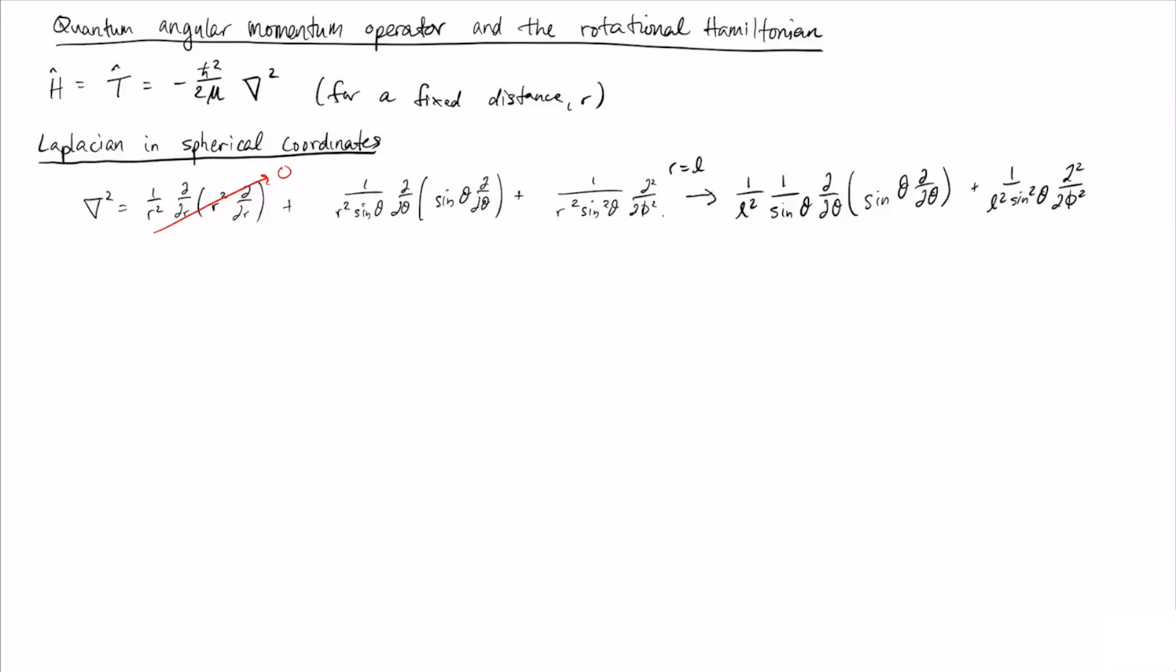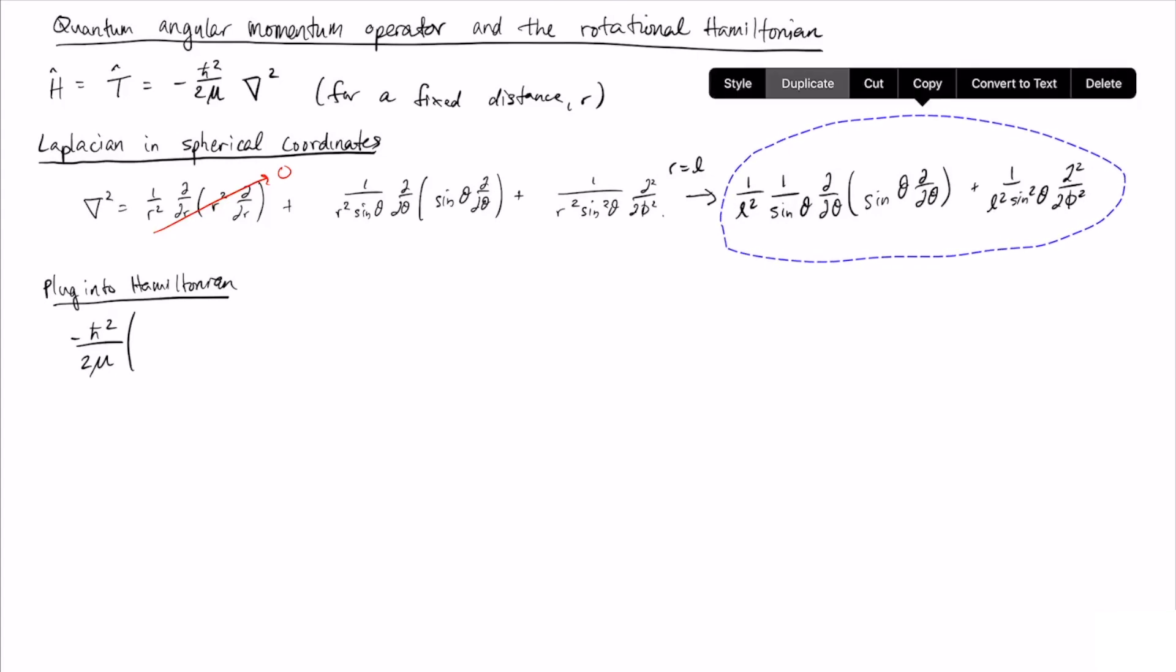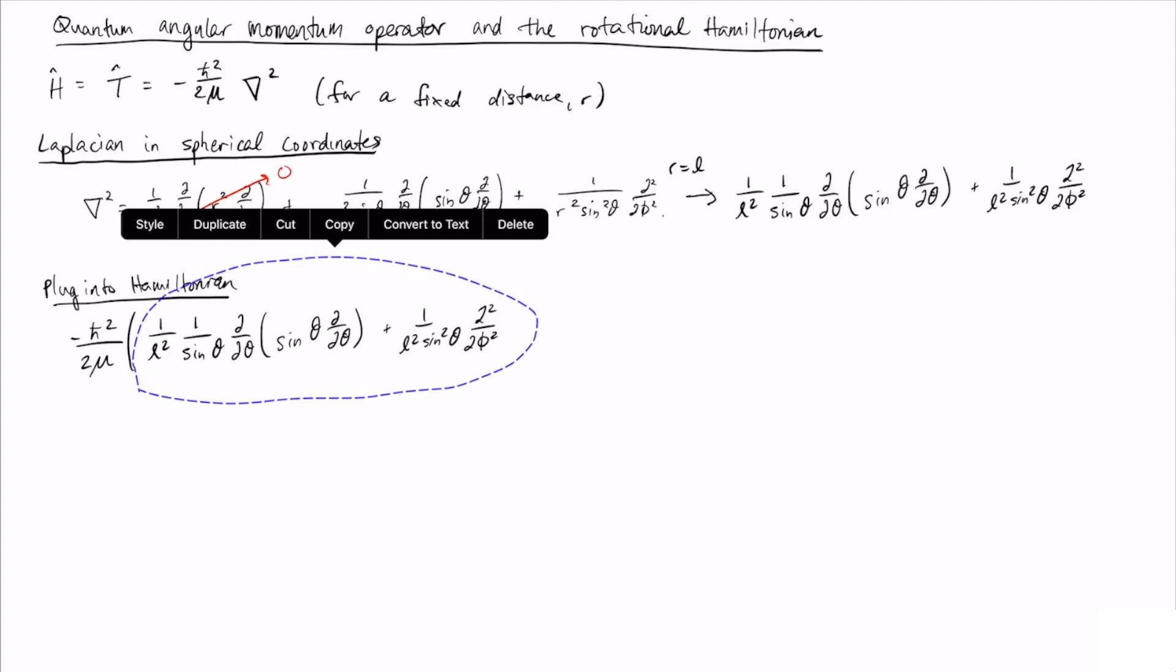Now let's take this and plug it into our Hamiltonian and see what happens. If we look at this, you'll notice that there is a 1 over l² in both terms here, and we have this mu here. And so we can combine these. We have 1 over mu times l² in every term here.